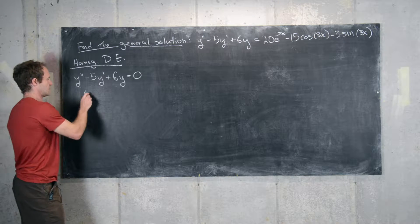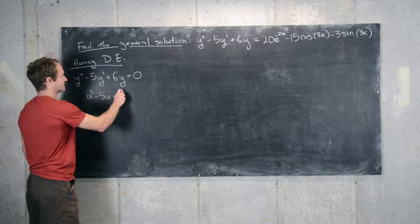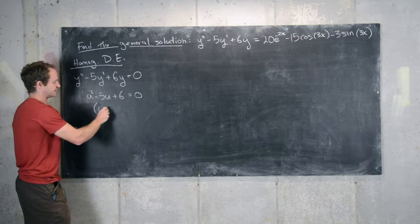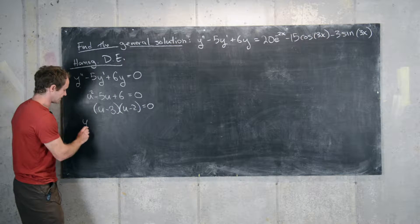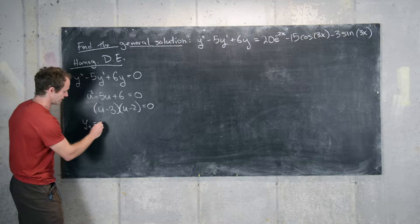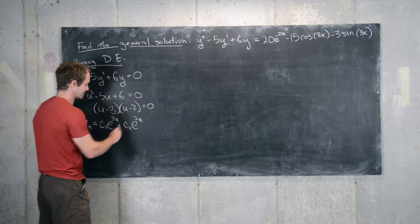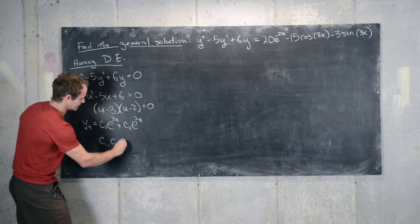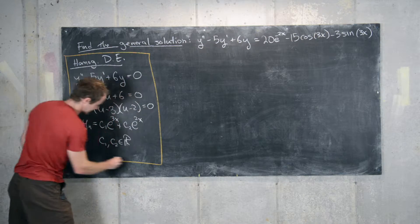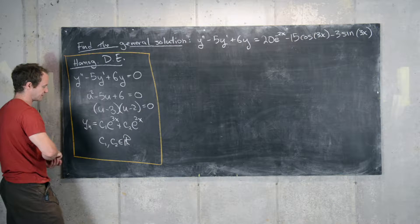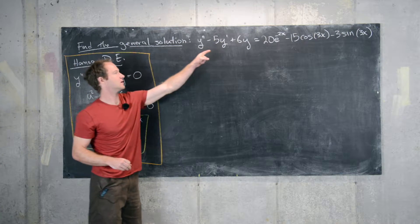We'll look at the characteristic polynomial for this solution. That's given by u squared minus 5u plus 6 equals 0, which we can factor into u minus 3 times u minus 2 equals 0. So the roots are 2 and 3, which tells us that the solution to the homogeneous differential equation is c1 e to the 3x plus c2 e to the 2x, where c1 and c2 are arbitrary constants. We'll need this at the end.